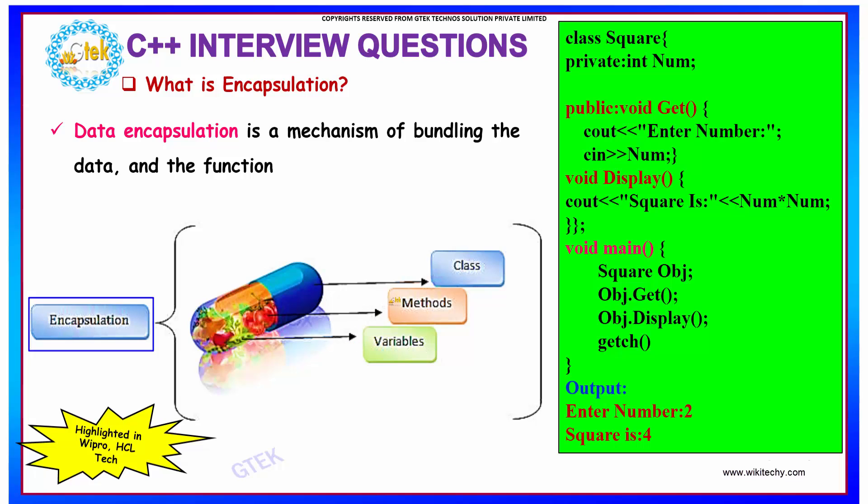Here, if you see, we are binding the methods, which can be any functions, and our variables. Say num over here - so num is a variable and the methods include get and display.